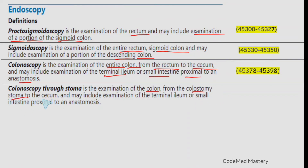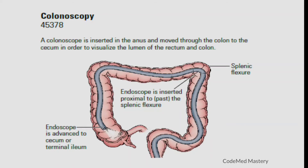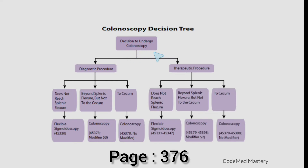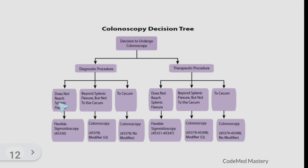Colonoscopy through stoma is the examination of the colon from the colostomy stoma to the cecum, and may include examination of the terminal ileum. In a colonoscopy, a colonoscope is inserted in the anus and advanced through the colon to the cecum to visualize the rectum and colon. There is a colonoscopy decision tree in CPT manual page 376 to help select the correct code based on whether the procedure is diagnostic or therapeutic and how far the scope advances: not reaching the splenic flexure, beyond the splenic flexure but not to the cecum, or to the cecum.